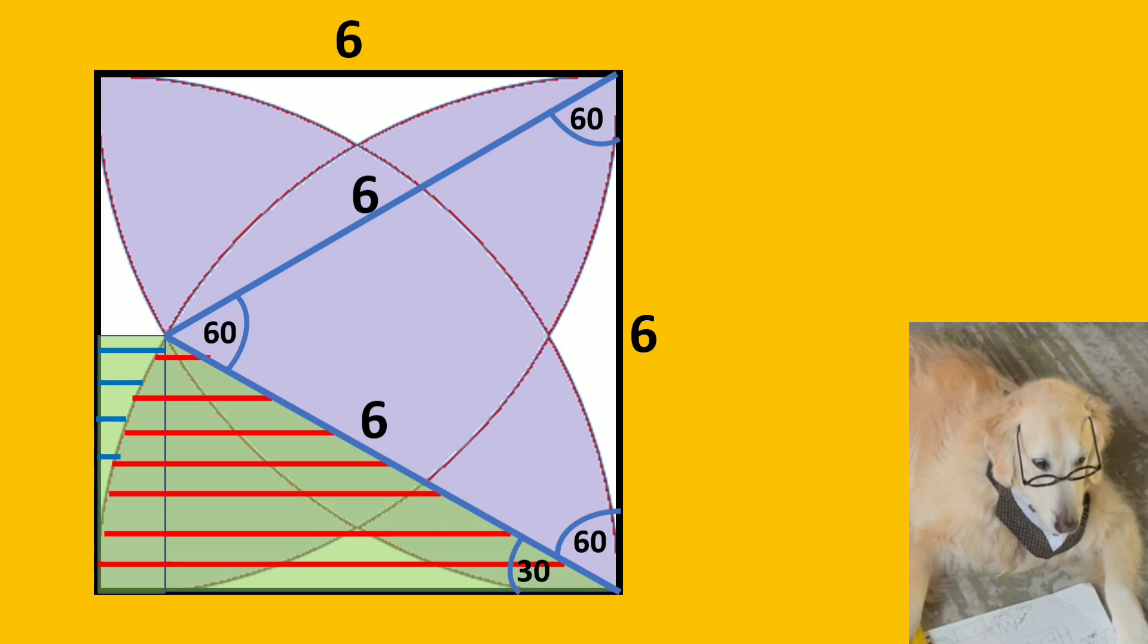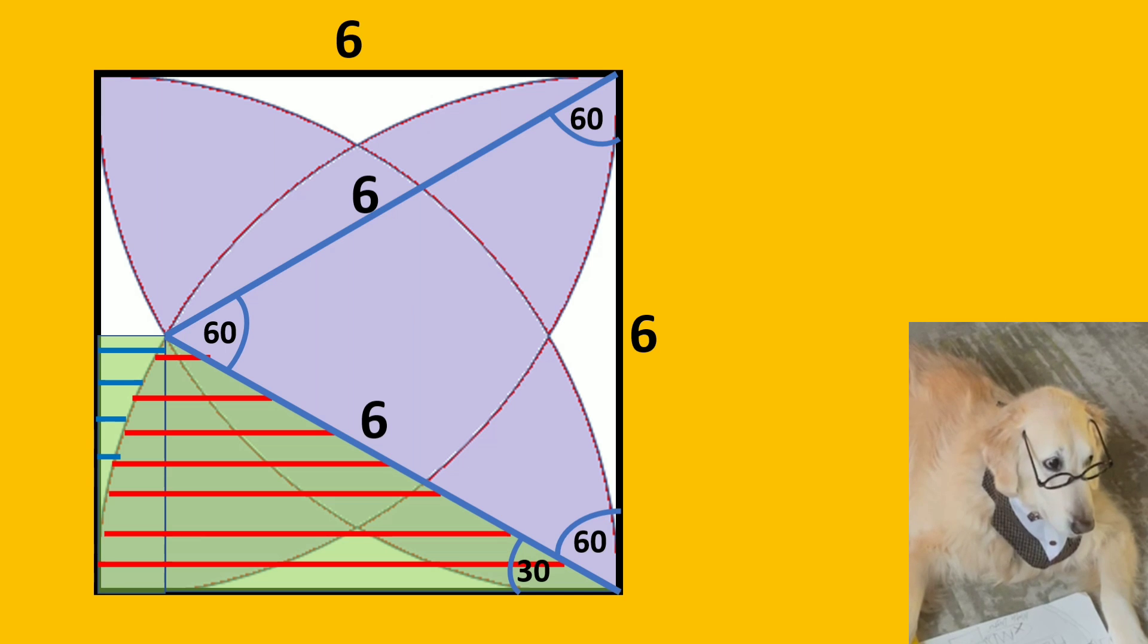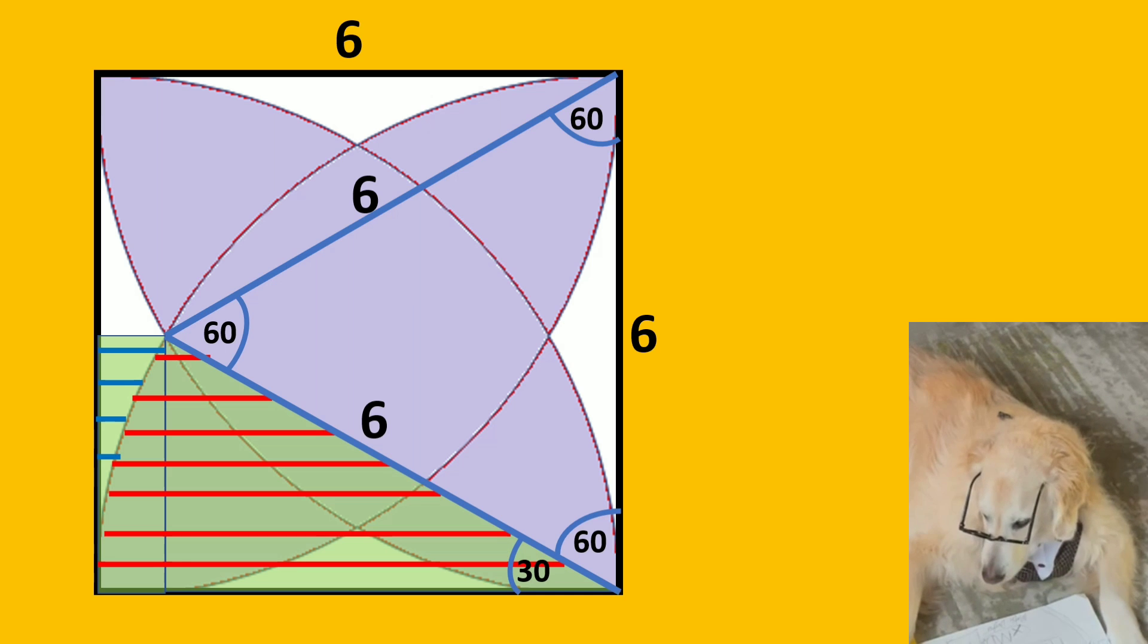To do that, we need some new lines. You can see we have two blue lines which are both radii of their circles, so their length should be 6. That means now we have an equilateral triangle.